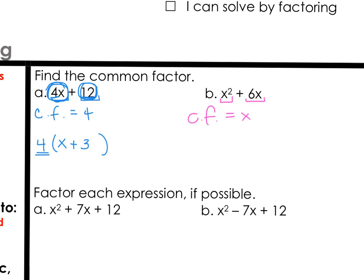If we take that out of each term and put it in front of the product, we would take x out of x², and that would give us an x left over. If we take x out of 6x, all we would have left is 6. So the common factor is x, and we would get x(x + 6).